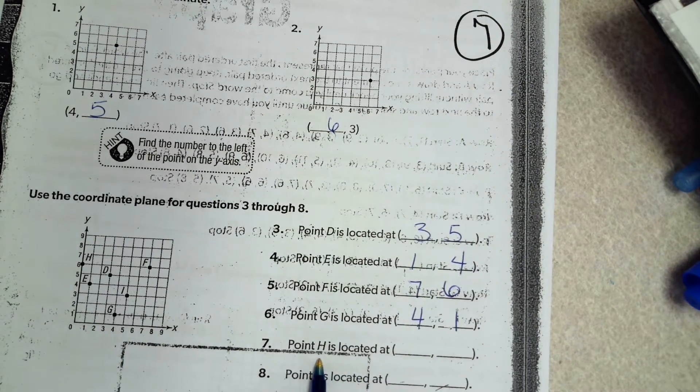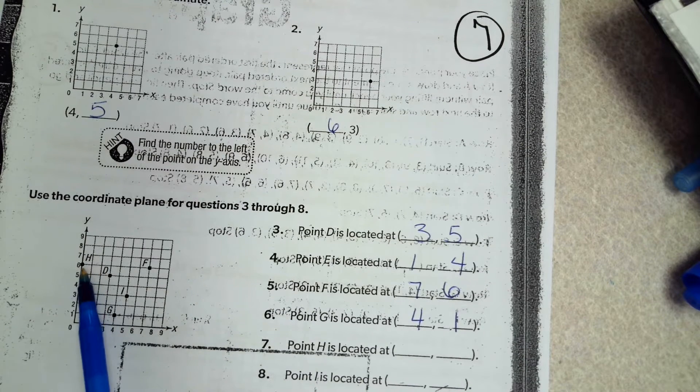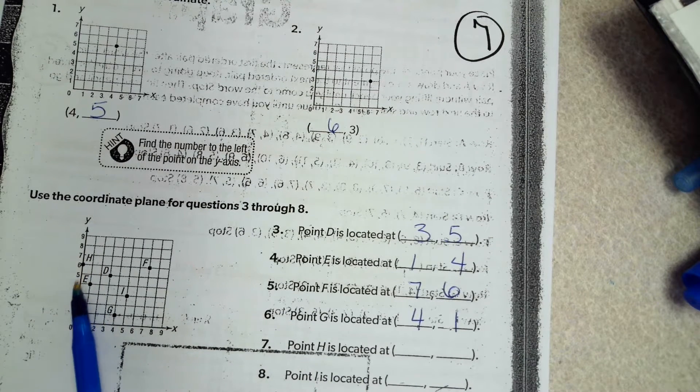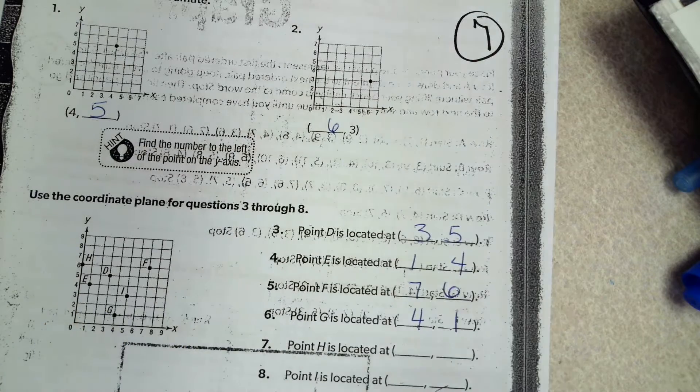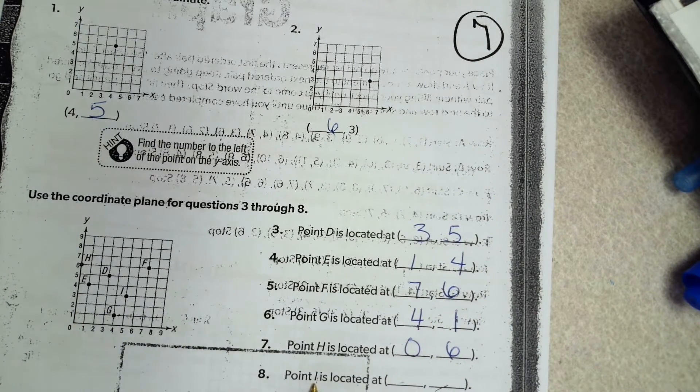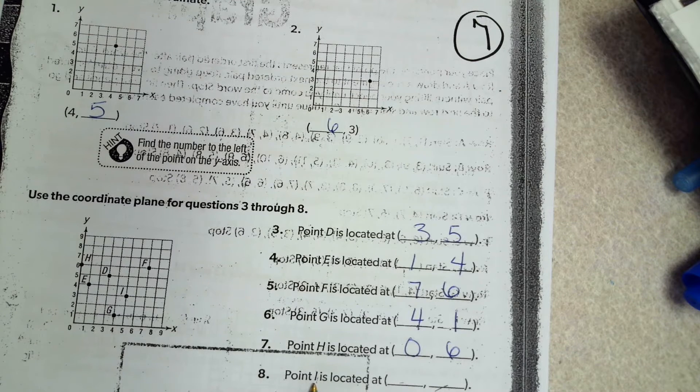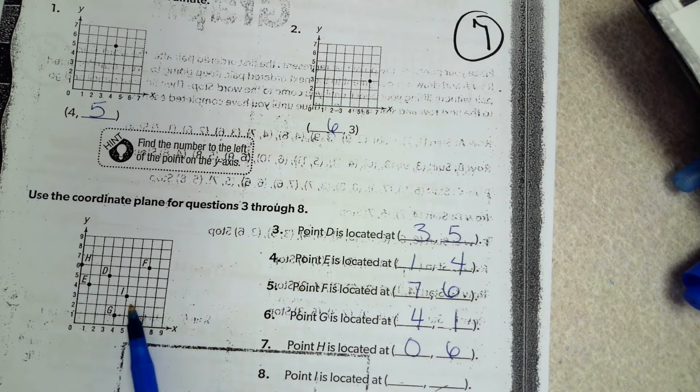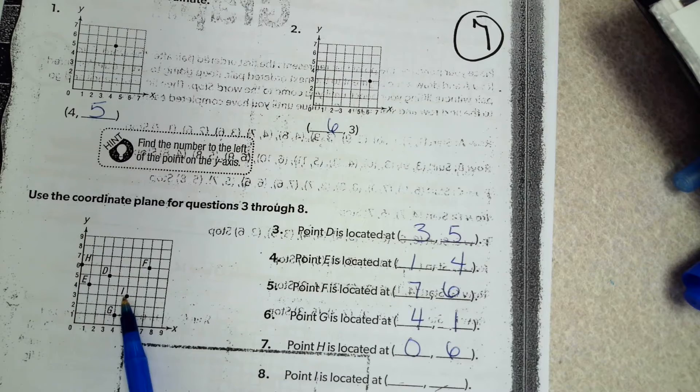H. H is here, over 0 because it's actually on that line. Over 0, up 6. I. I is over 5, up 3.